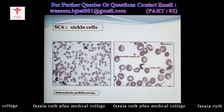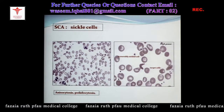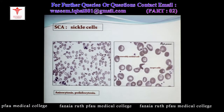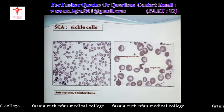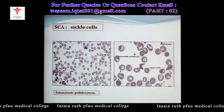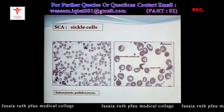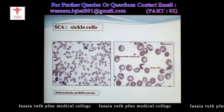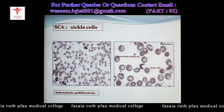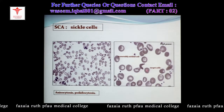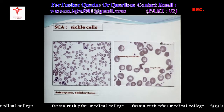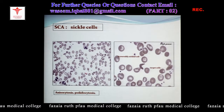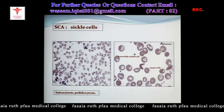In sickle cell anemia, this abnormal hemoglobin — hemoglobin S — is formed, which ultimately results in deformity in the shape of the RBCs. They become sickle-like. Sometimes you have target cells also, and sometimes the sickle cells are in fact boat-shaped cells.